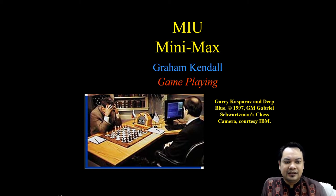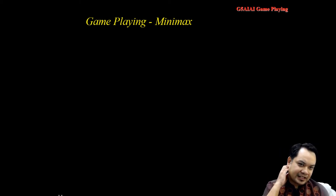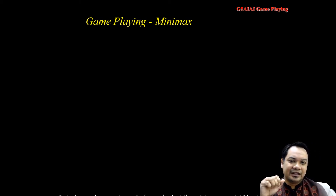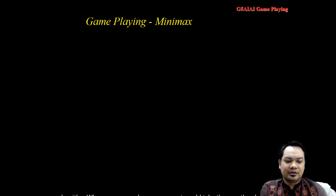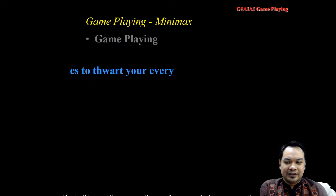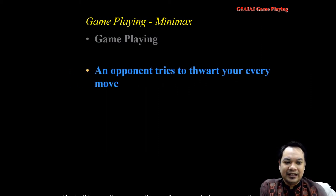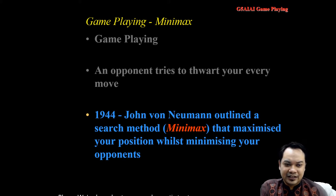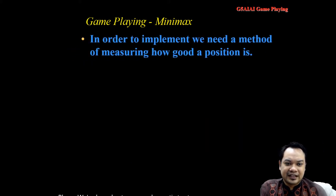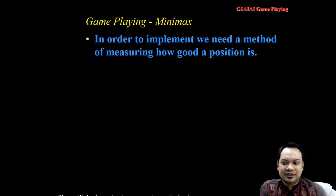Minimax is a game-playing algorithm where you and your opponent take turns. The opponent usually represents a human or another computer playing against our algorithm. It is mostly used in turn-based game playing where we have an opponent trying to thwart every move. Examples include tic-tac-toe, chess, checkers, and many more games.